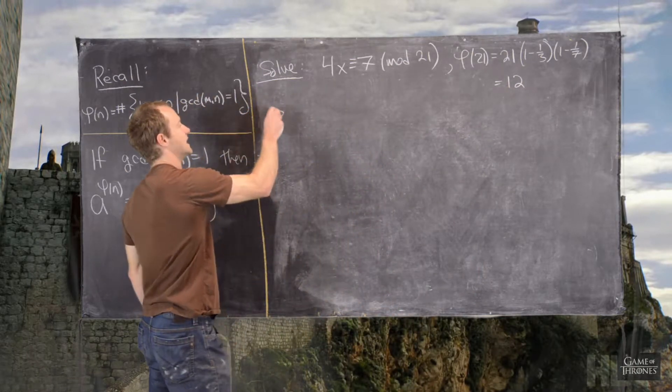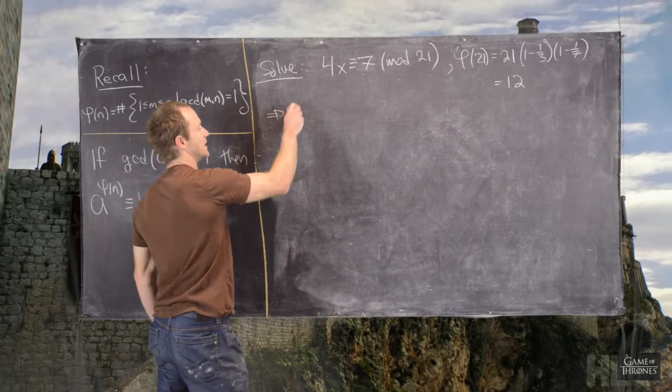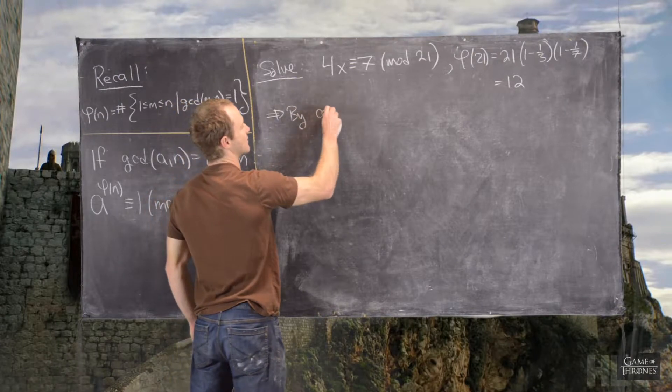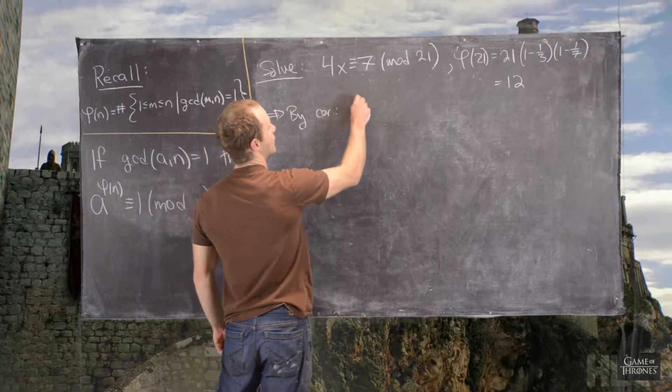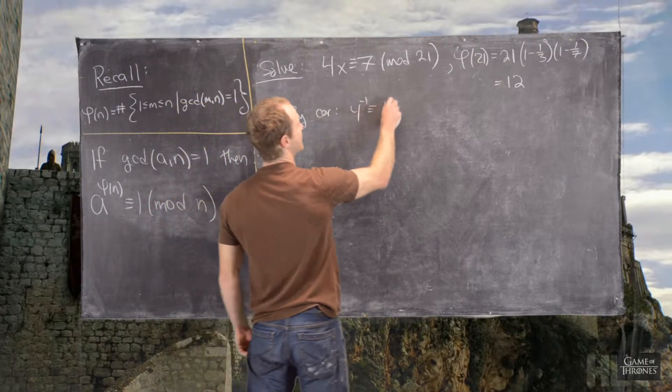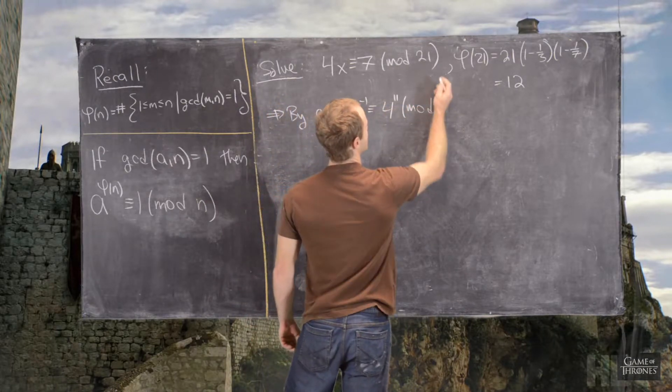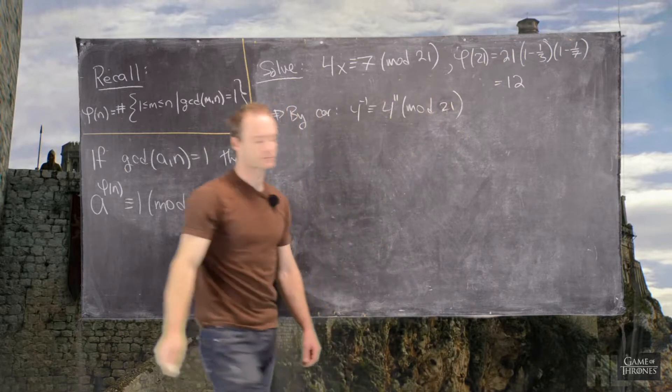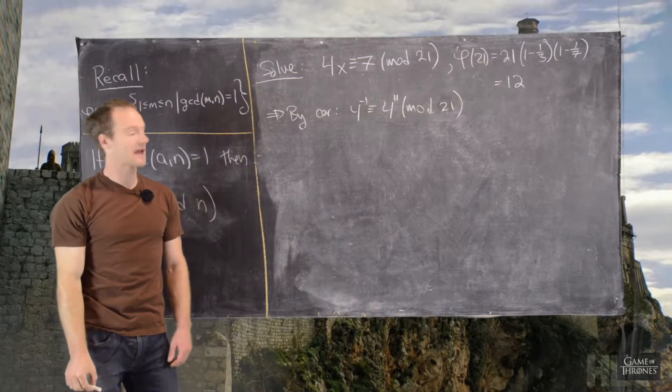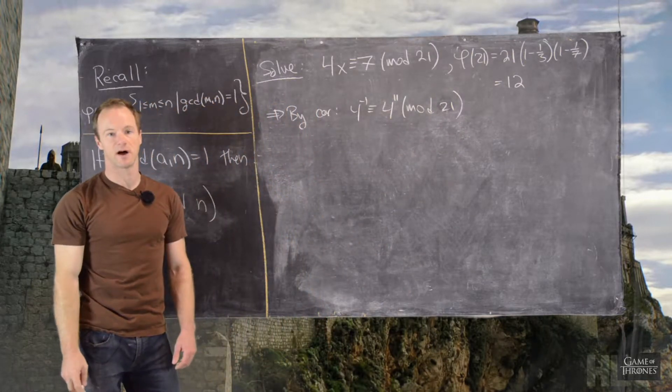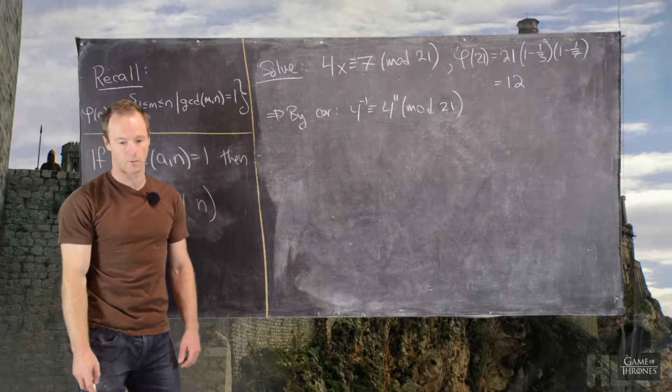So, what that tells us, as an application from the corollary we just proved, we know that 4 inverse is congruent to 4 to the 11 mod 21, which means we need to calculate 4 to the 11 mod 21 in order to know 4 inverse.